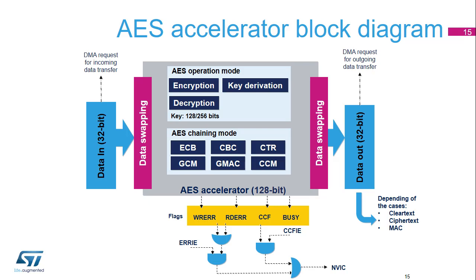The COMPUTATION COMPLETE flag, called CCF, is set by hardware when the computation is complete. An interrupt is generated if the CCF INTERRUPT ENABLE bit was previously set. The BUSY flag, used only with GCM mode, indicates that a higher priority message can interrupt the current message during GCM payload phase for encryption mode.